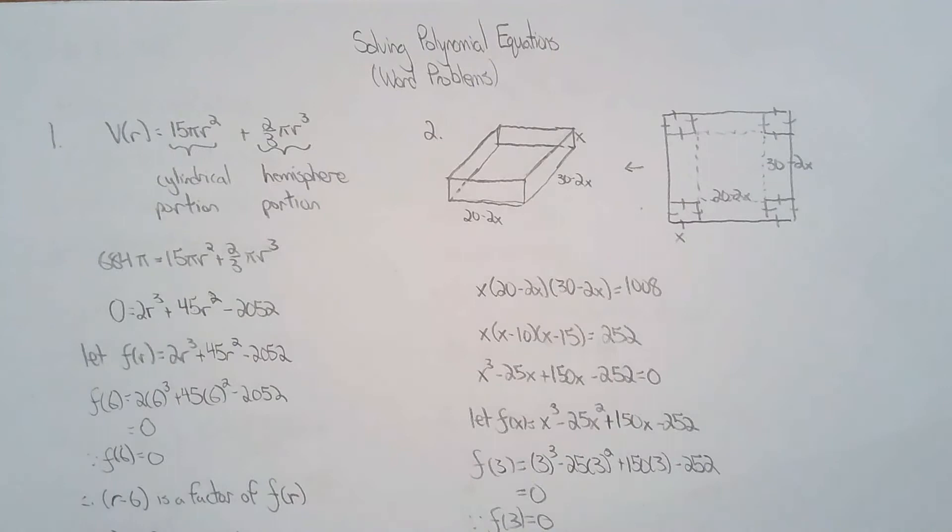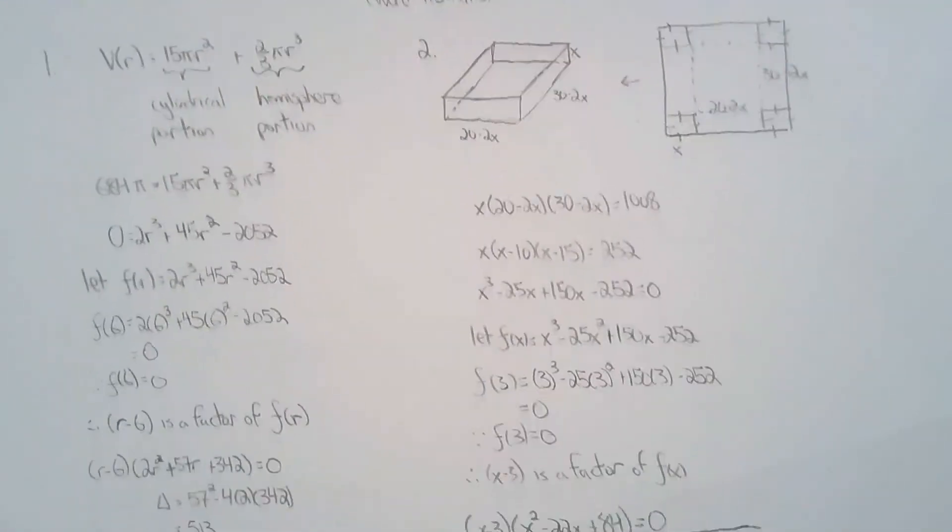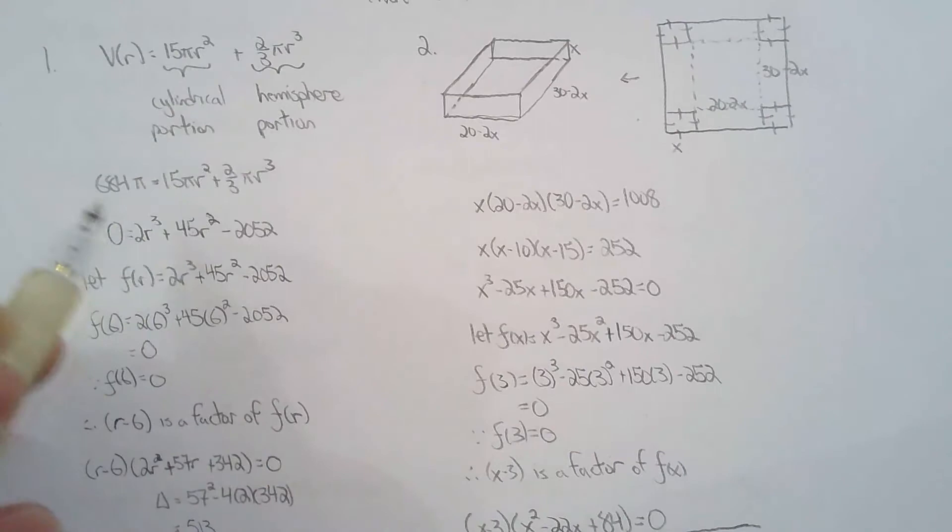If we gave this to you on a test, we would probably give you the formula for the volume of a cylinder and a hemisphere because we don't really expect you to remember that from grade 9. After I generated the equation, I set it equal to 684 pi. Solve, solve, solve, solve, solve.